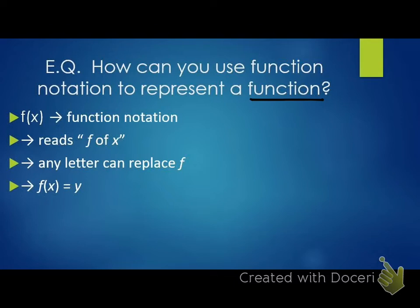When you see a problem written with F of X, this is called function notation. You have the letter F, and then directly beside it in parentheses, you have an X. You read it as 'F of X.' Any letter can be where F is — I can have a G, I can have an H there. As long as there is a letter directly followed by a set of parentheses with an X, any letter can be there for F.